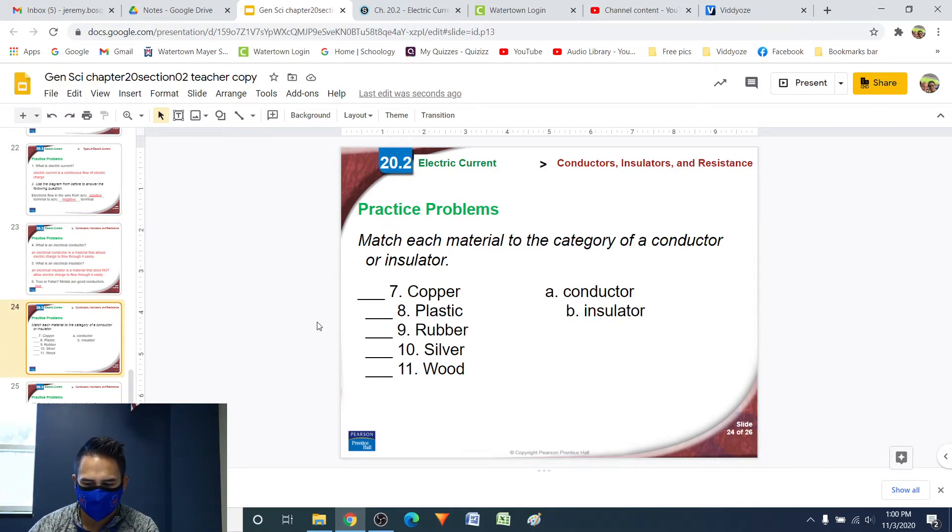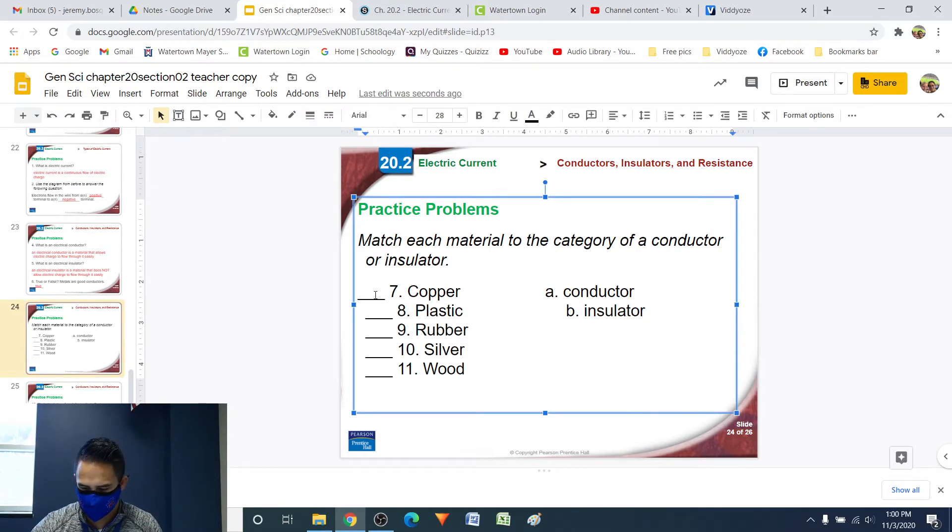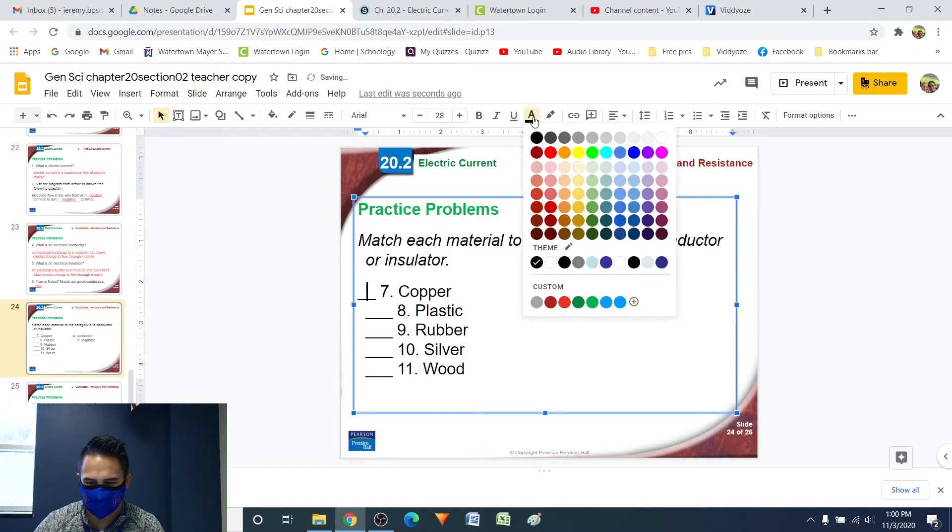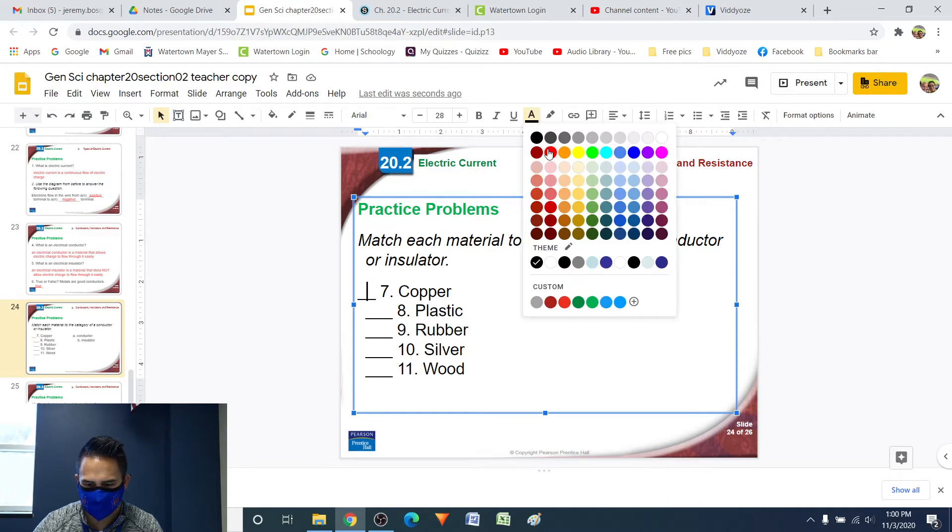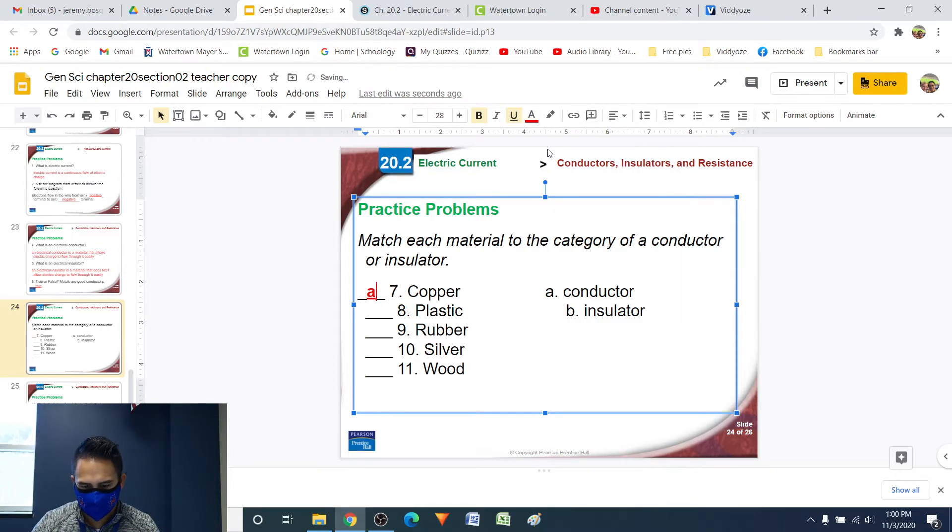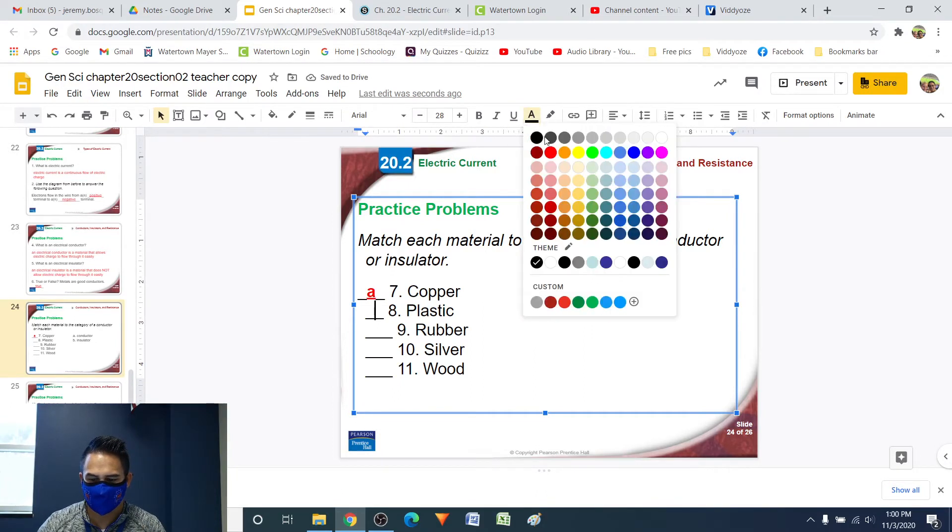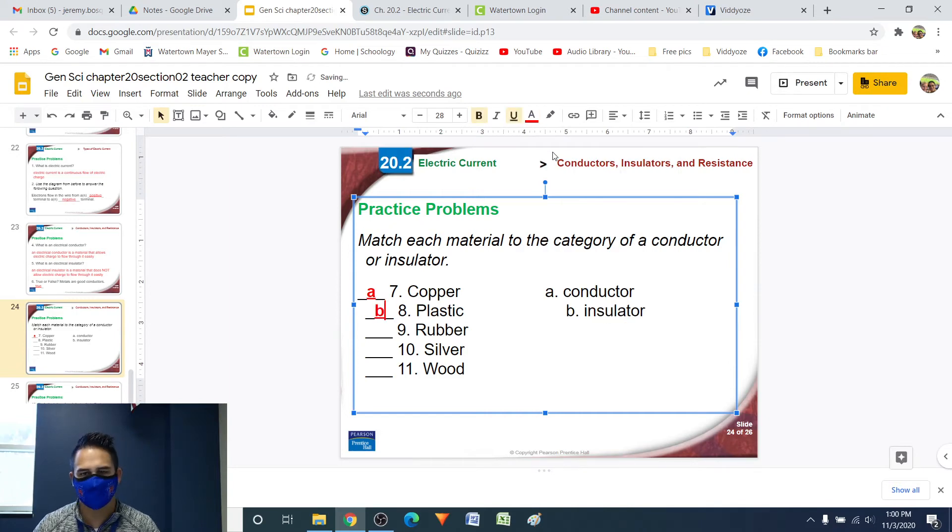Match each material to the category of a conductor or insulator. Number seven, we have copper. We know that copper is a metal and metals are great electrical conductors. So this one is going to be a conductor. Number eight, plastic. So plastic is not a great conductor. It is a good insulator, however. This is the reason why most plastics are covered around electrical conductors. That way they don't leak out electric charge.